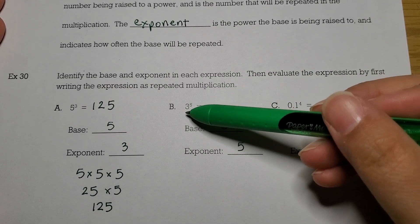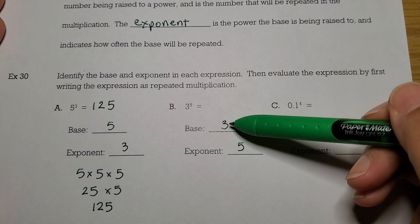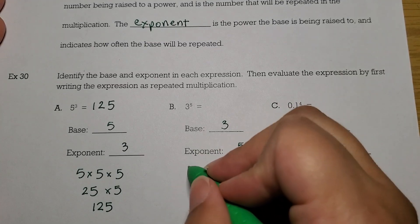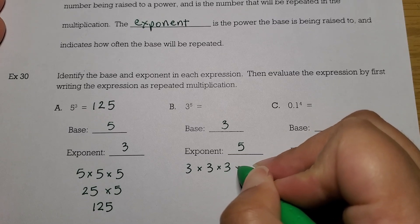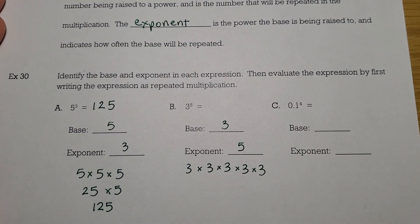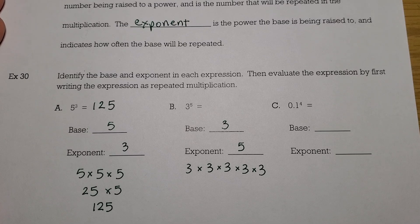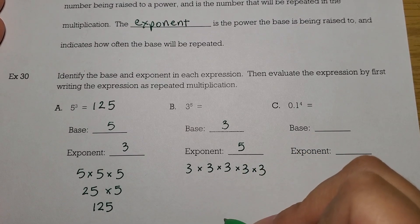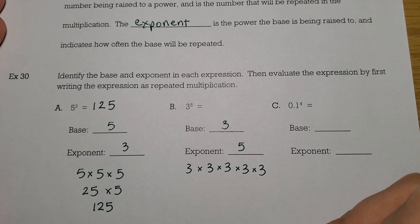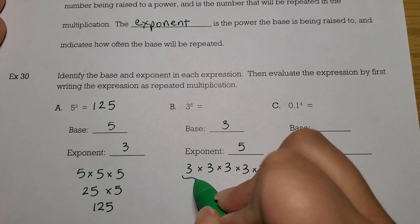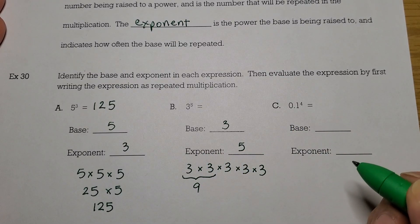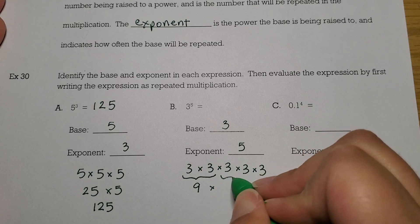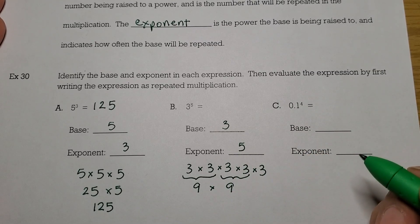To find 3 to the fifth, we're going to take 5 copies of 3 and multiply them. So 1, 2, 3, 4, 5. Now I'm going to do a little shortcut here when I go to multiply them. I'm going to use what we'll later find out is the associative property. So I'm going to do a 3 times 3 to get 9. Then I know that 3 times 3 is 9 again.